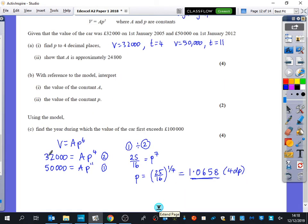Now that I've worked that out, I can substitute it back into one of these equations. So I get 32,000 is equal to A times 1.0658 to the power of four. So A is equal to 32,000 divided by that to the power of four. And you get A is equal to 24,796 pounds which is approximately equal to 24,800 pounds. Because it says show that A is approximately 24,800.